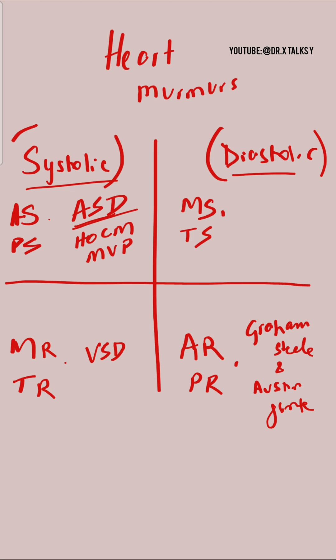An optional step to remember how many murmurs are in each quadrant: there are five murmurs in the top-left quadrant, four in the bottom-right quadrant, three in the bottom-left, and two in the top-right. Hope this video helped.